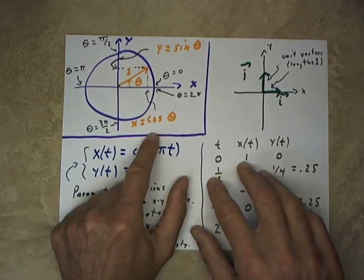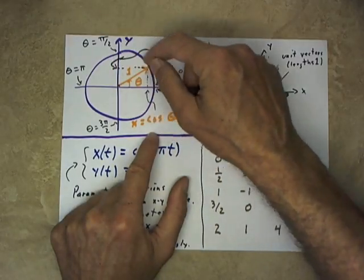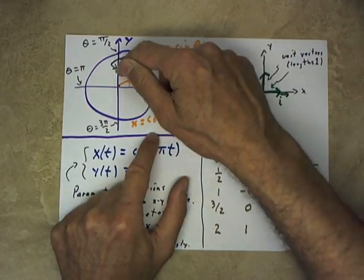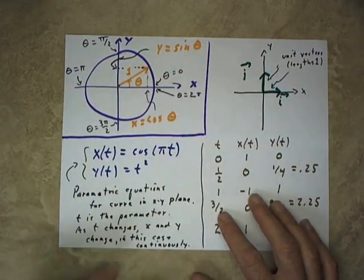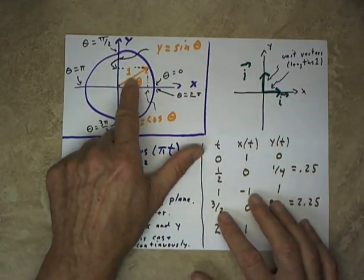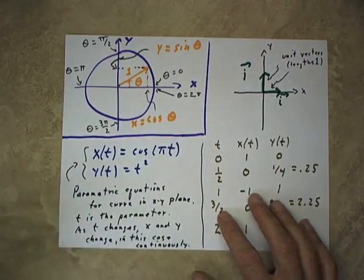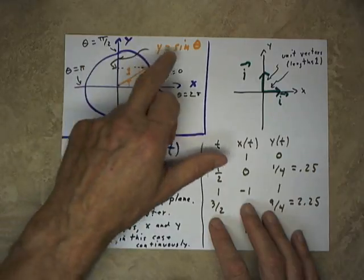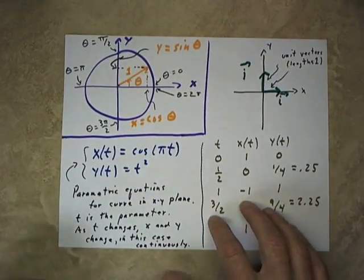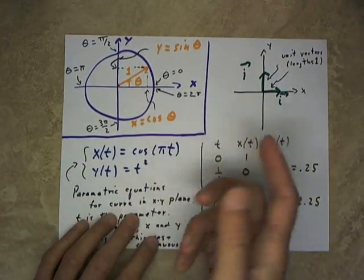is the cosine of theta. And the y coordinate obtained by projecting the point over to the y axis is y equals sine of theta. Now that's only if the radius is one. If the radius is greater, if the radius was two, then this would be two times the cosine of theta, two times the sine of theta. And theta is measured in radians.